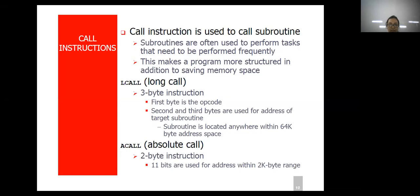The first instruction in the call set is LCALL. LCALL means long call. This is a three-byte instruction — the first byte is the opcode, and the second and third bytes are for the address of the target subroutine. The subroutine can be located anywhere within a 64KB address space. ACALL is absolute call, a two-byte instruction where only 11 bits are used for the address, within a 2KB range. This is similar to long jump and short jump — we have long call and absolute call, with the difference being the target address size.